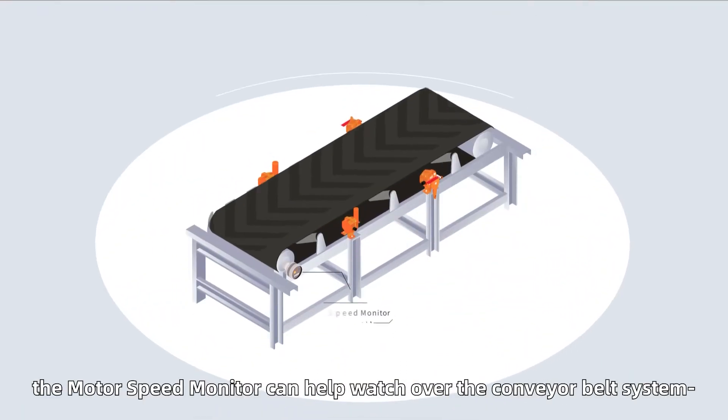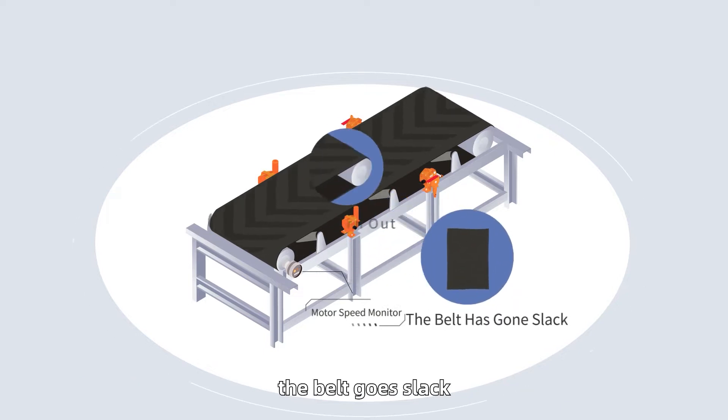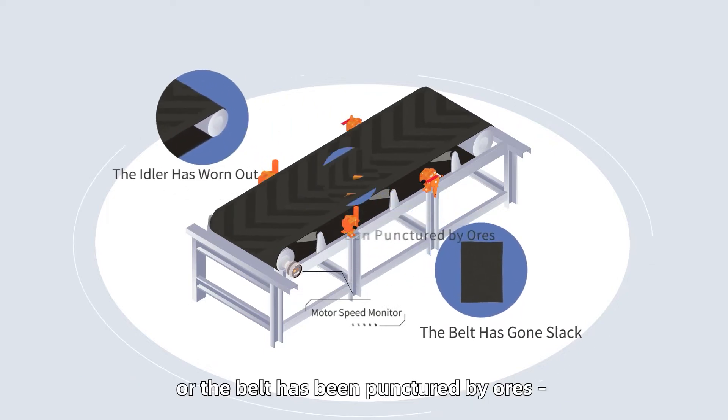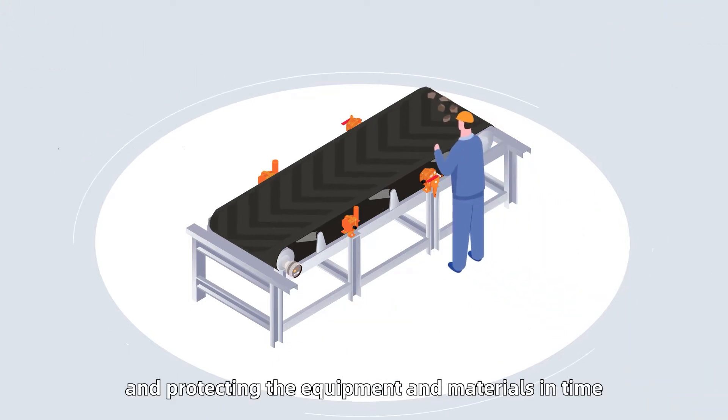In addition, the motor speed monitor can help watch over the conveyor belt system. If the belt goes slack, the idler wears out, or the belt has been punctured by ores, this assists operators in handling and protecting the equipment and materials in time.